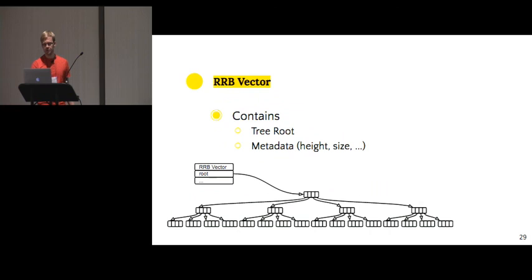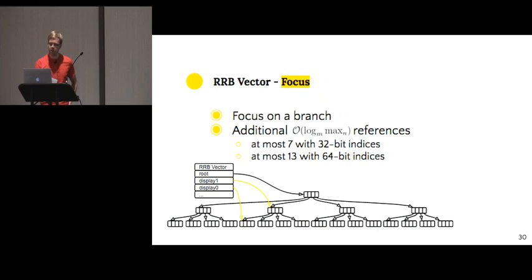So the first thing that I'll show you is how the vector object is actually structured. So basically the basic structure only has a reference to the root and then some metadata like size to compute things faster or height that we required for the traversal dump. And now we'll introduce the concept that we call focus, which is basically we choose a focus branch for any vector and we'll add some nodes that I marked in yellow to inside of the vector objects. So we have direct access to those nodes and these additional fields that are not so large because if we have 32 bit indices, we have at most seven, or if we have 64 indices, we will have at most 13 additional references, which is strictly lower than the M's that we're using. So strictly lower than the size of the nodes.